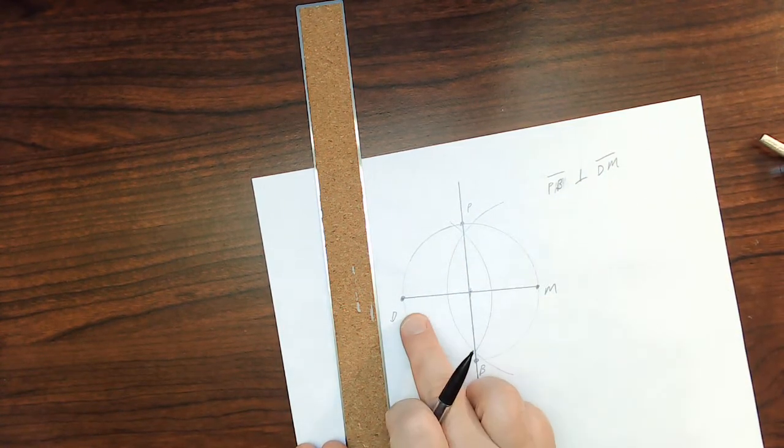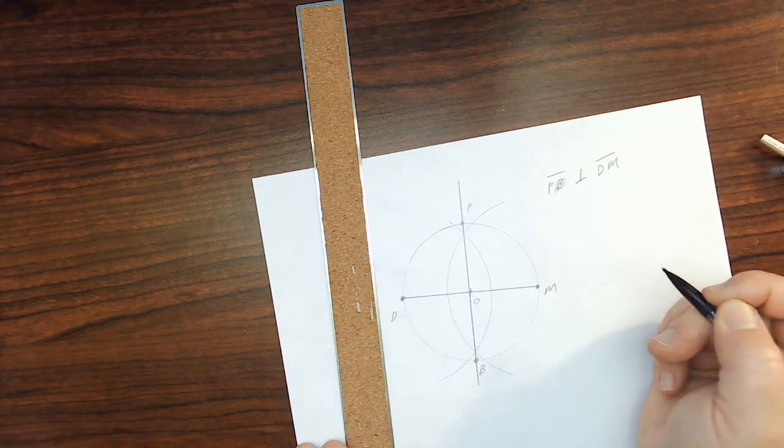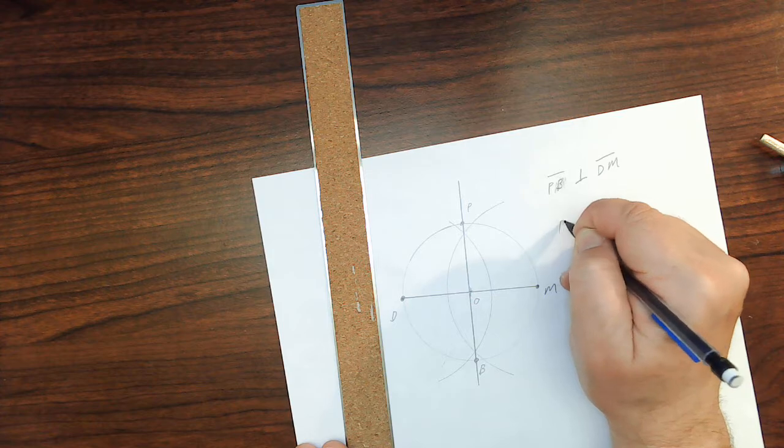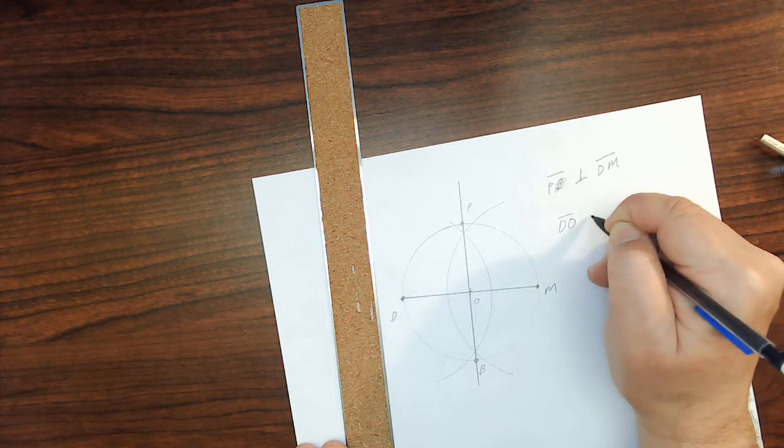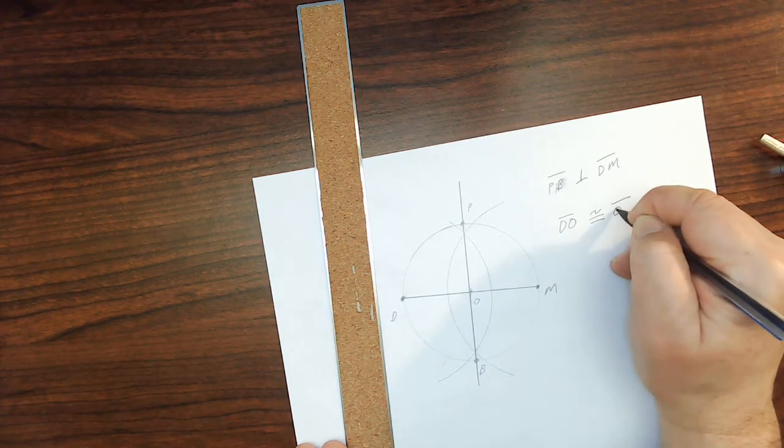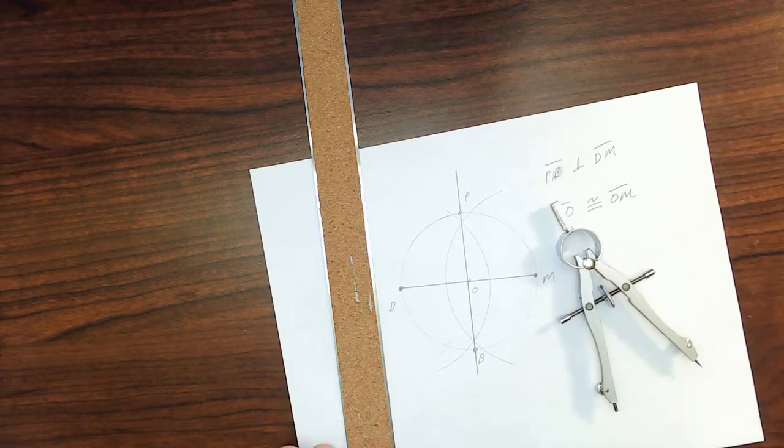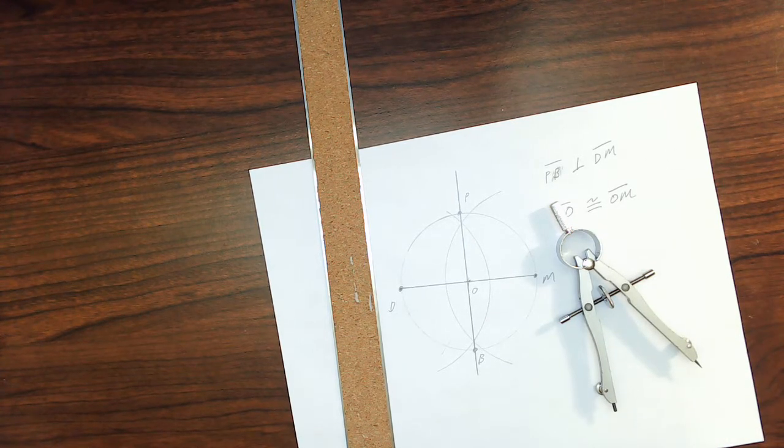And I could say that this, I'm going to label the center point of the circle O. That line segment DO is congruent to, which means the same size and shape as, the line segment OM. And so, there it is. I'll see you next time.